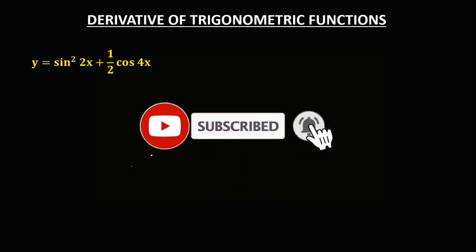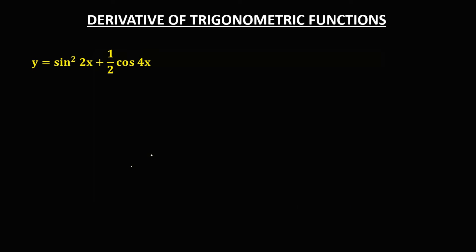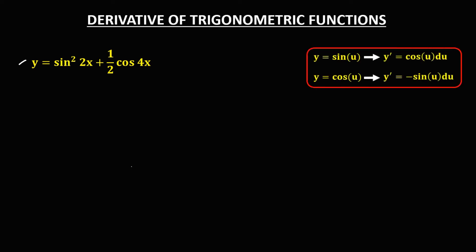Welcome to MathStorya. Today's topic is finding the derivative of trigonometric functions. We'll use these formulas: for sine u, the derivative is cosine u times the derivative of u; and for cosine u, the derivative is negative sine u times the derivative of u.